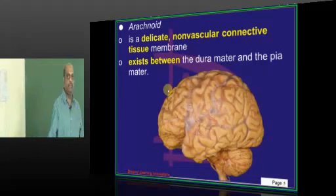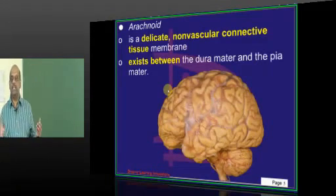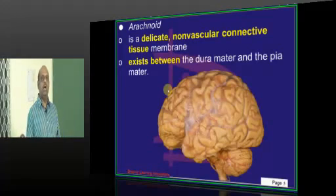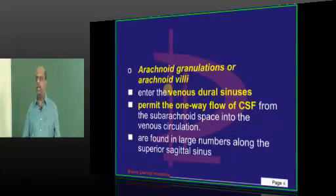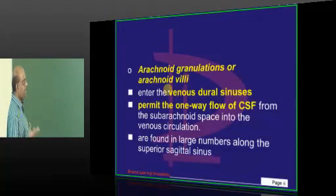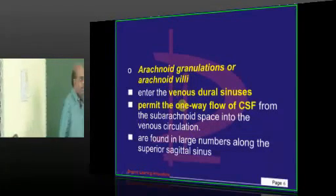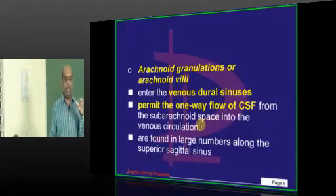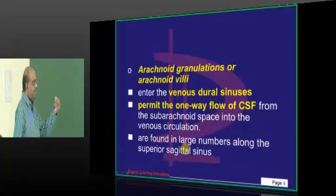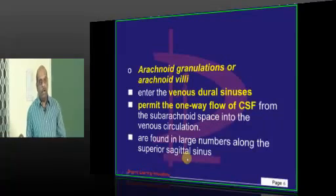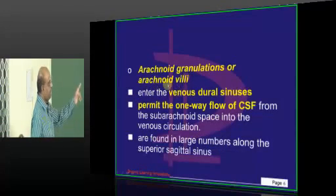What is arachnoid? Arachnoid is a non-vascular connective tissue, once more delicate, embedded between the dura on the outside and pia on the inside — arachnoid is in the middle. Arachnoid needs to be remembered because of the granulations, also called arachnoid villi. These arachnoid villi permit the CSF to flow in only one direction — from the subarachnoid space into the venous circulation. They offer a way to drain CSF into the venous circulation. That is the main function of these arachnoid granulations.